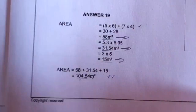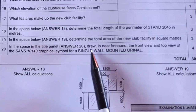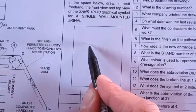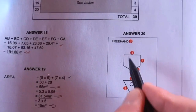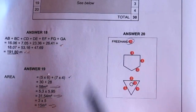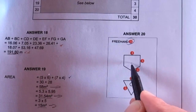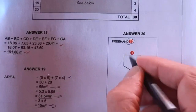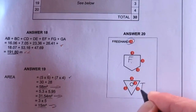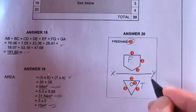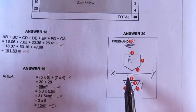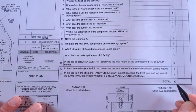The last question: in the title panel, draw freehand the front view and top view of the graphical symbol for a single wall-mounted urinal. This must be drawn freehand — that earns a mark. The correctness of your front view earns a mark, and your top view earns a mark. Remember this is first-angle orthographic projection, so the front view goes above and the top view below. There are four marks total here. Learn these symbols beforehand so you're not caught out.